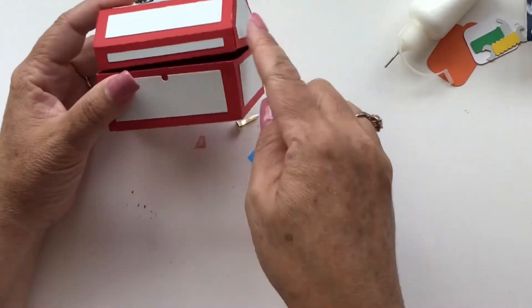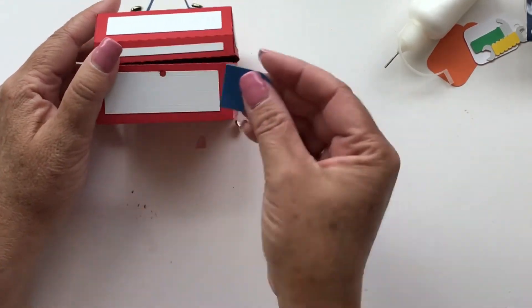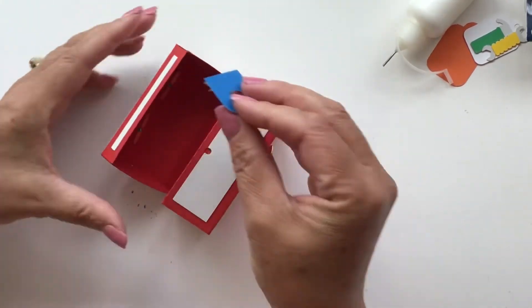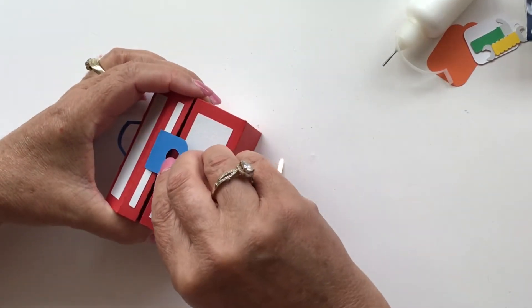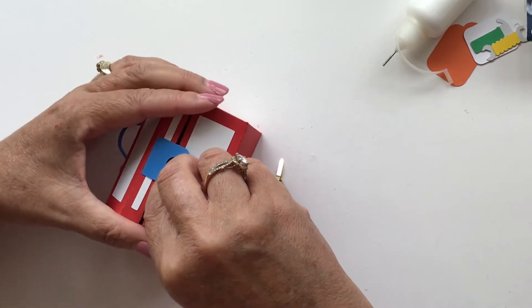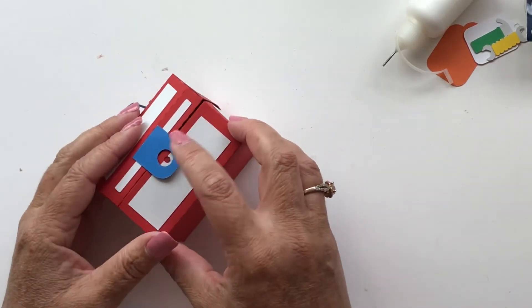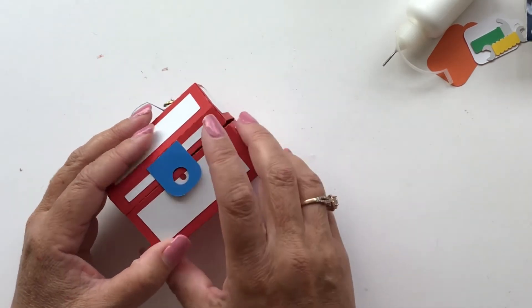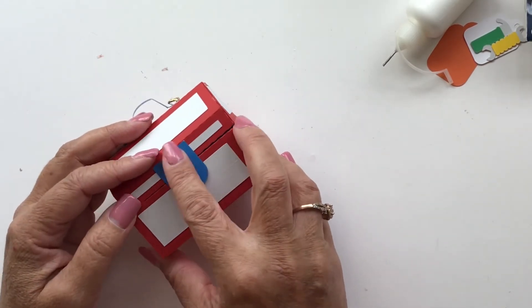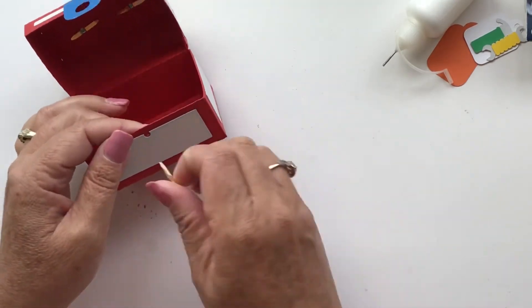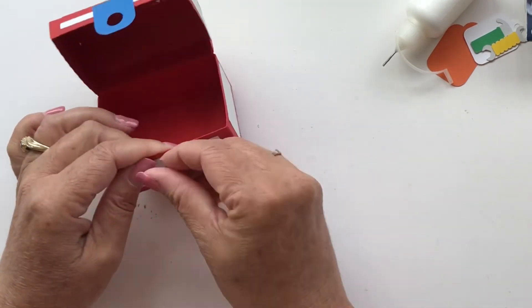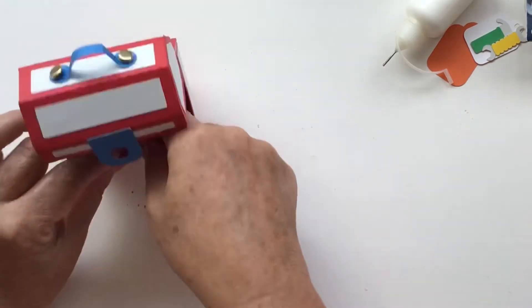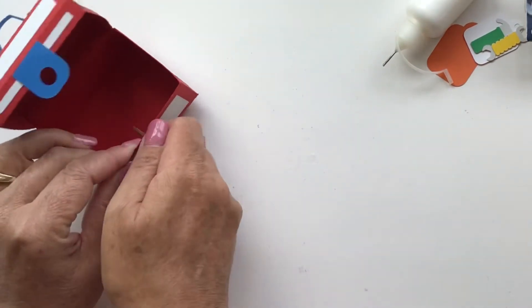And then this goes right here on this lid with this edge right up against the fold mark and right in the middle, so just like that. You want that hole over that hole. And then we're going to take this last brad and stick it through and open it up.